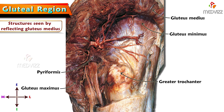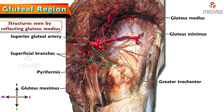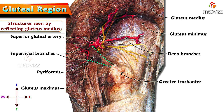Piriformis is also attached to the greater trochanter, and we can see it coursing towards it. Between gluteus minimus and piriformis there are neurovascular structures. The blood vessel is the superior gluteal artery, which ramifies into superficial and deep branches — superficial branches pierce the gluteus maximus, while deep branches supply gluteus medius and minimus. The nerve associated with the artery is the superior gluteal nerve, which innervates gluteus medius and minimus muscles.